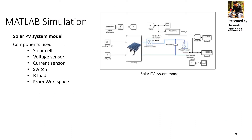MATLAB Simulink is used to build the solar PV system model. PV panels are created using solar cells. Sensors are used for measuring panel voltage and current. Switches create open or short circuit faults. A 'From Workspace' block is used for importing solar irradiance data from an Excel sheet.